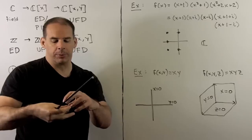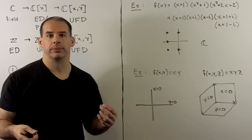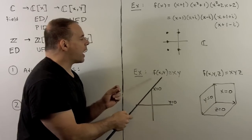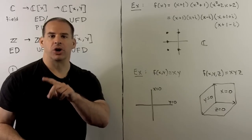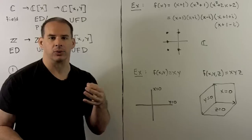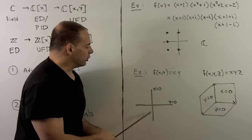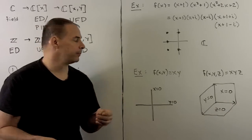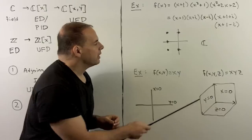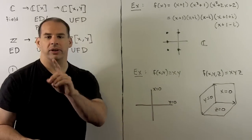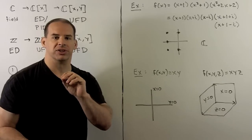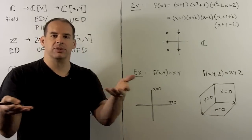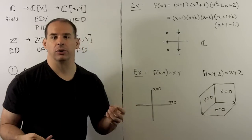That idea generalizes. If we work over the reals so we can draw pictures: take f(x,y) = x·y; the irreducibles are x and y, set those equal to zero, I get x=0 and y=0 — the y and x axes. These look like two separate objects, so each one on its own corresponds to something irreducible. Pushing it one more step, if I take f(x,y,z) = x·y·z, we have irreducible factors x, y, and z; setting each equal to zero gives the xy-, yz-, and xz-planes. Again, each of these objects seems like it should exist on its own without the other two — so in some sense, irreducible.